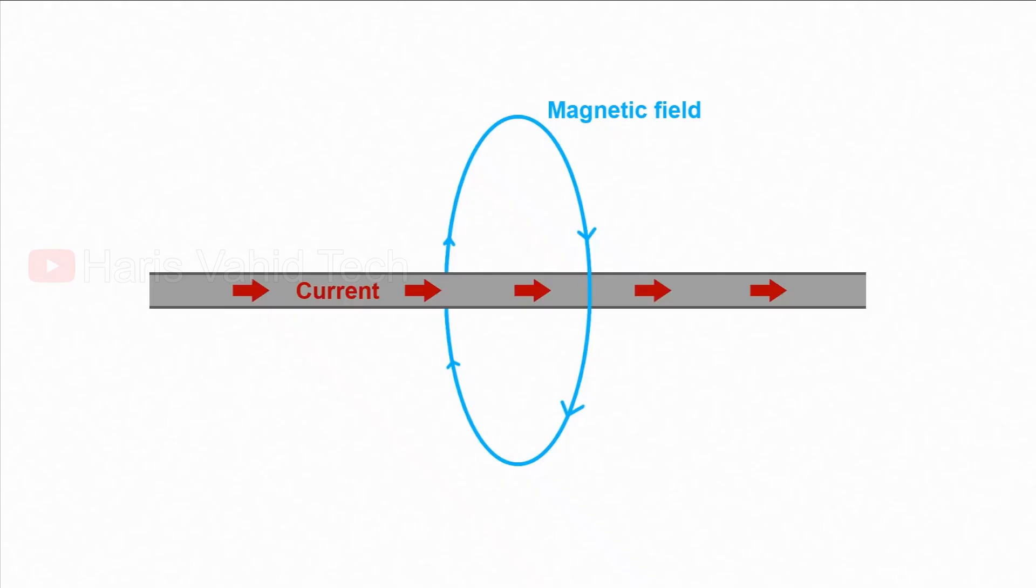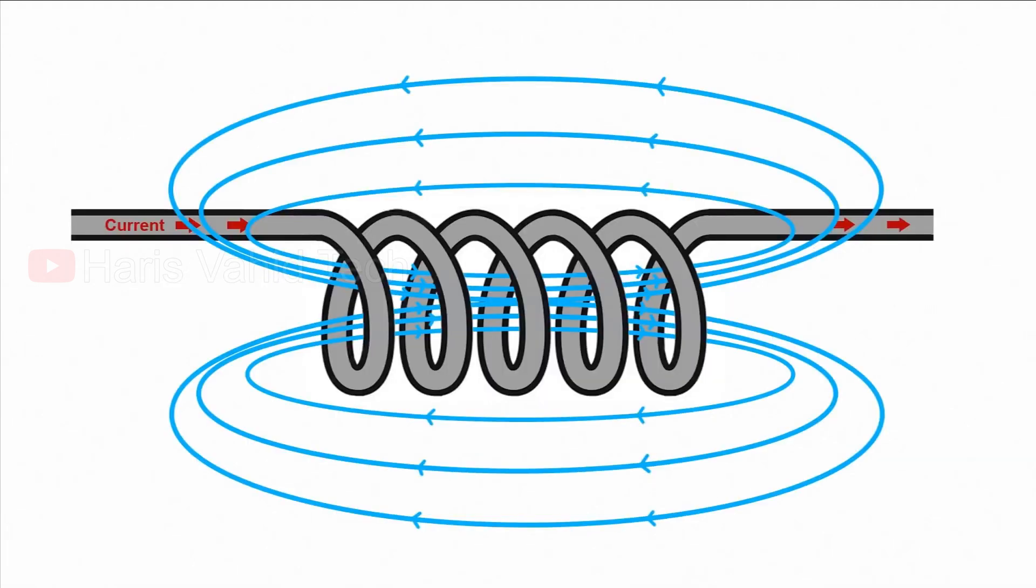Basically, an inductor is a device that temporarily stores energy in the form of a magnetic field. Inductors are usually coils of wire. And one of the basic properties of electromagnetism is that when we have current flow through a wire, you create a small magnetic field around it. So if we coil up a lot of wire, we will get a stronger magnetic field.